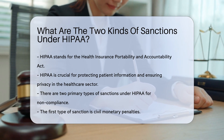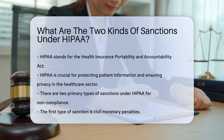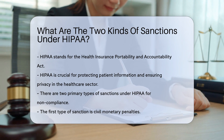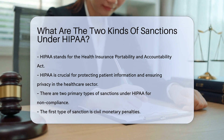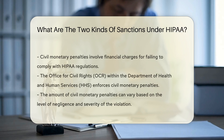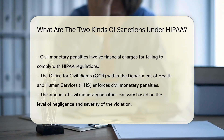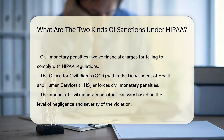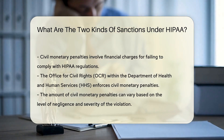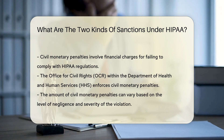Under HIPAA, there are two primary types of sanctions for noncompliance. The first type is civil monetary penalties — financial charges imposed on entities that fail to comply with HIPAA regulations. The Office for Civil Rights (OCR) within the Department of Health and Human Services (HHS) enforces these penalties. Civil monetary penalties can vary based on the level of negligence and the severity of the violation.